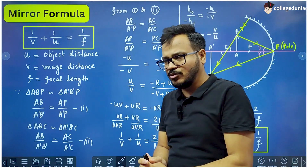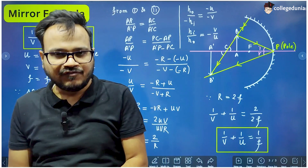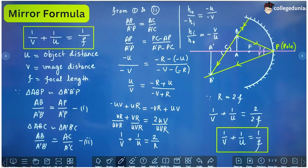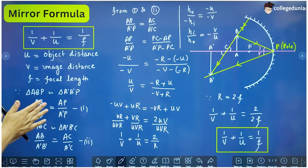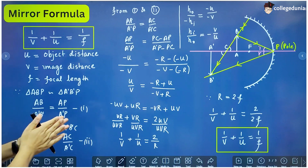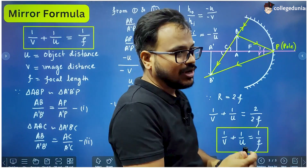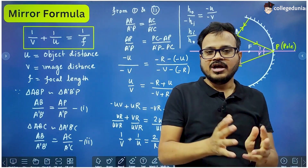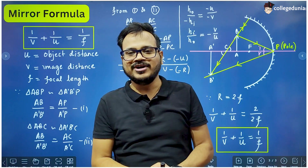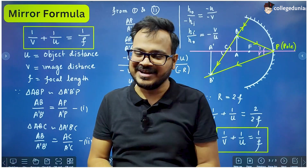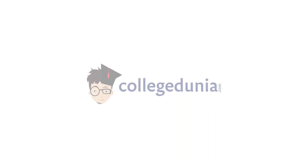This is a very important derivation in class 12 physics, so you have to prepare it very carefully. Write it 3 to 4 times so that you will be able to write it in your exam. Go and practice now. I will meet you in the next lecture. All the very best.